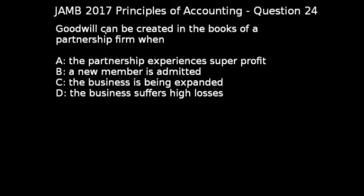JAMB 2017, Principle of Accounting, Question 24 says: Goodwill can be created in the books of a partnership firm when — the correct option to this question is option B, and option B says: a new member is admitted.